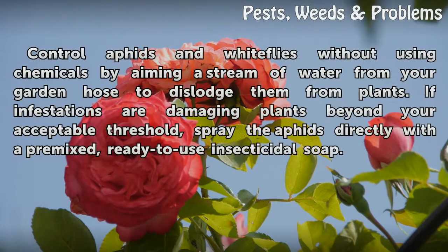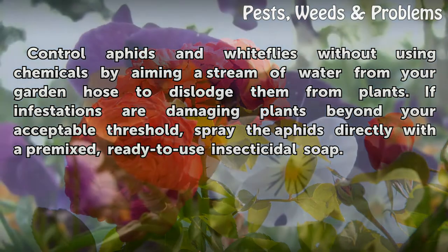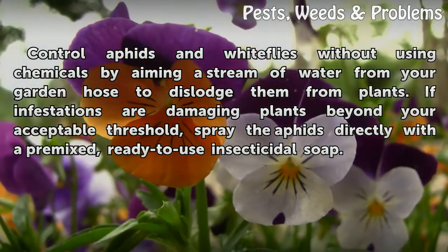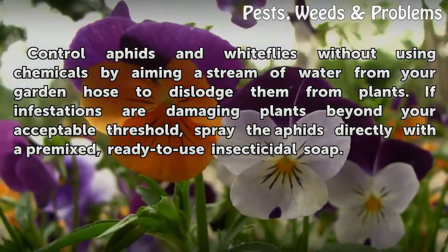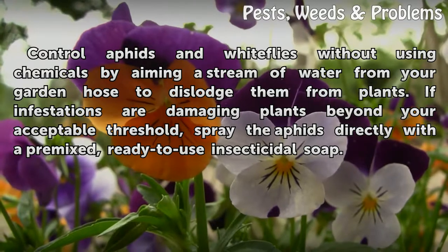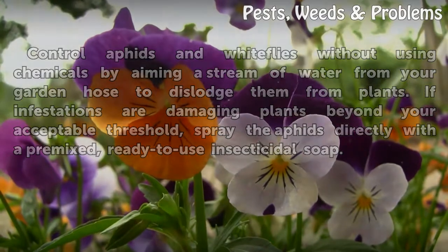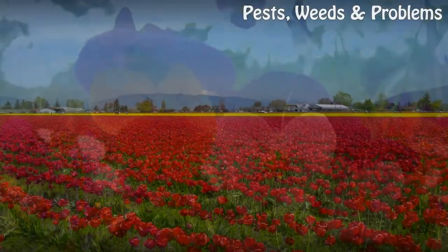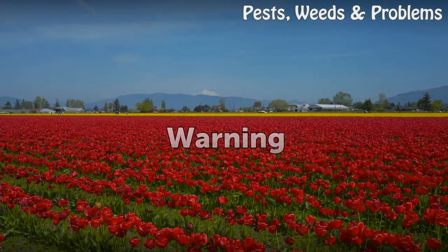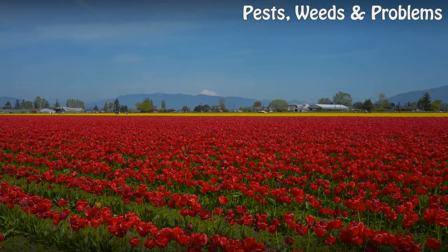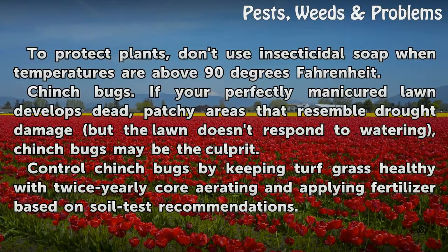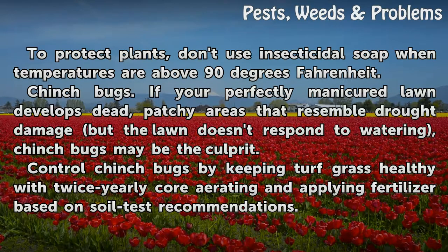Control aphids and white flies without using chemicals by aiming a stream of water from your garden hose to dislodge them from plants. If infestations are damaging plants beyond your acceptable threshold, spray the aphids directly with a pre-mixed, ready-to-use insecticidal soap. Warning: to protect plants, don't use insecticidal soap when temperatures are above 90 degrees Fahrenheit.